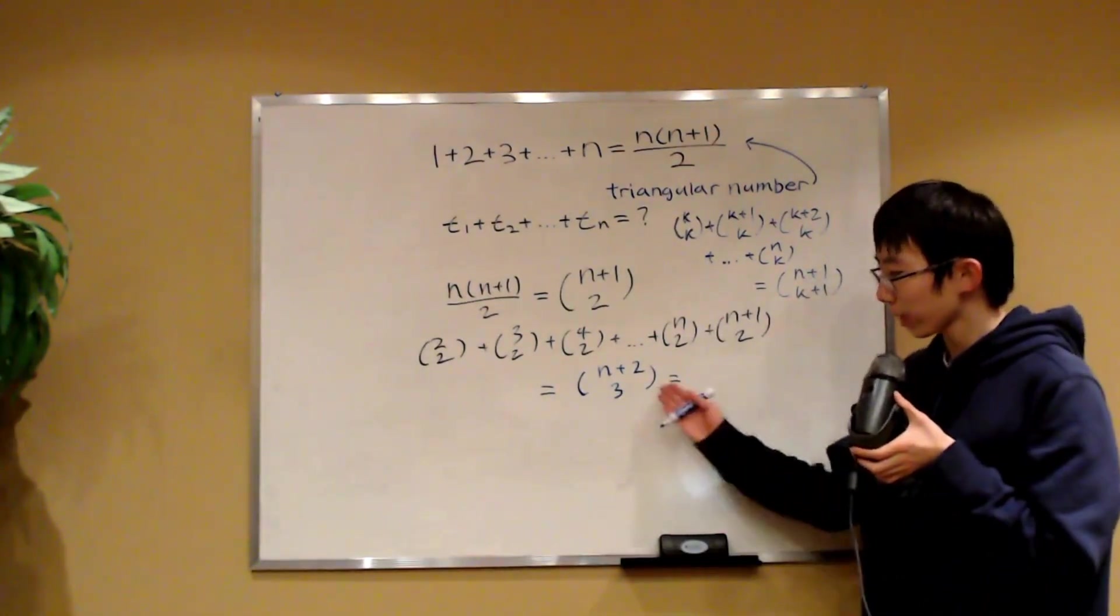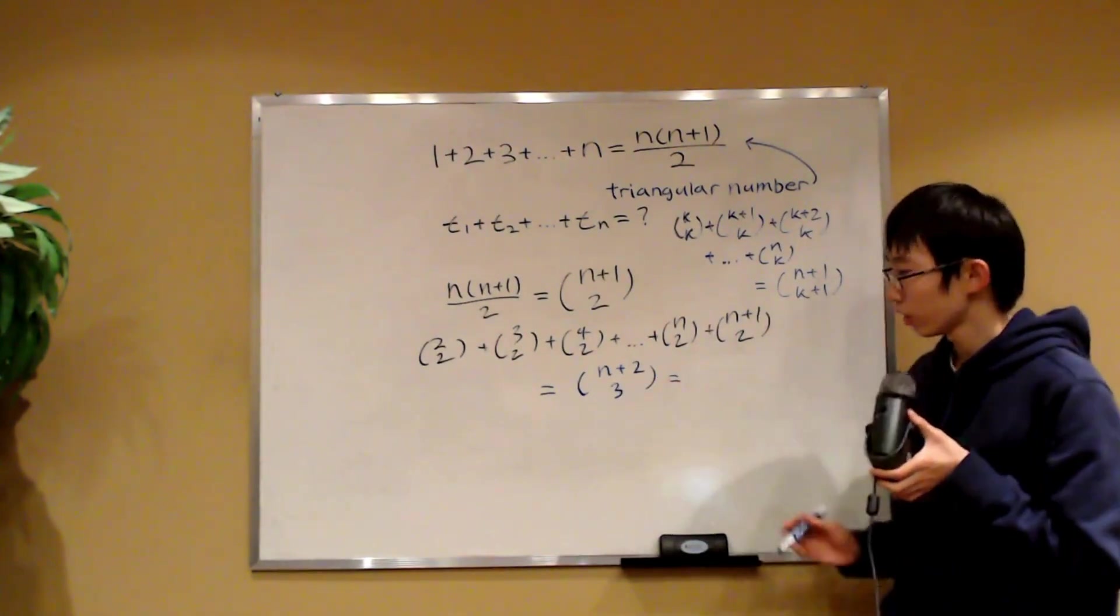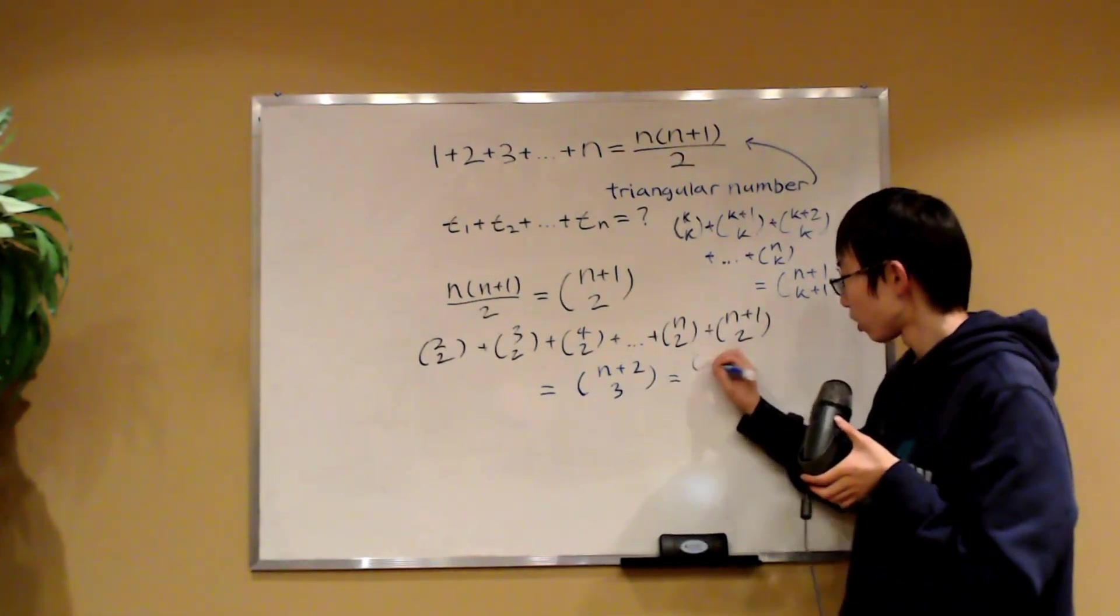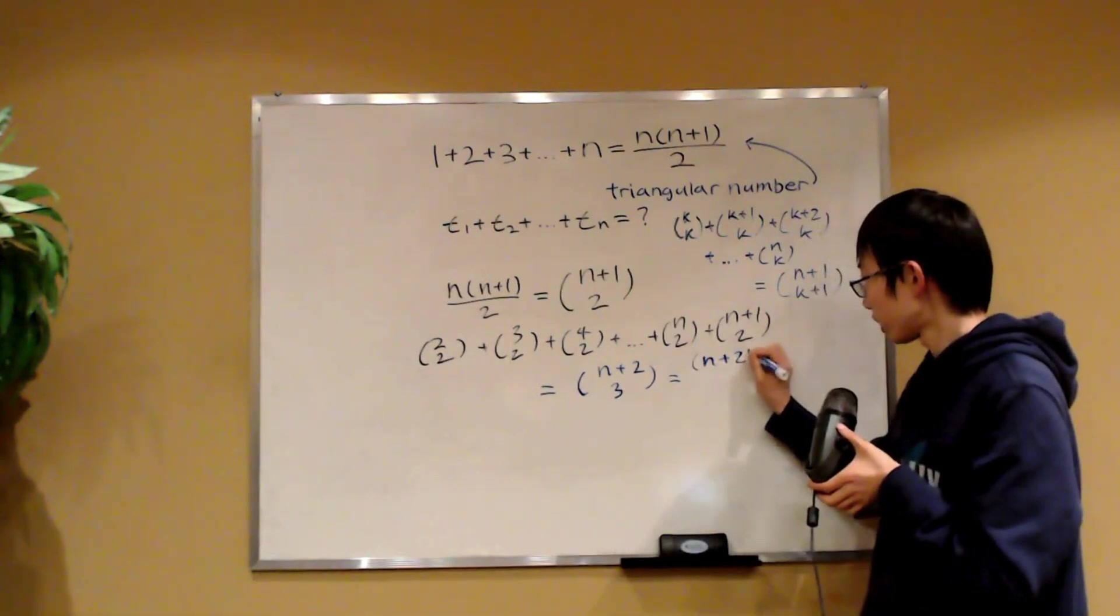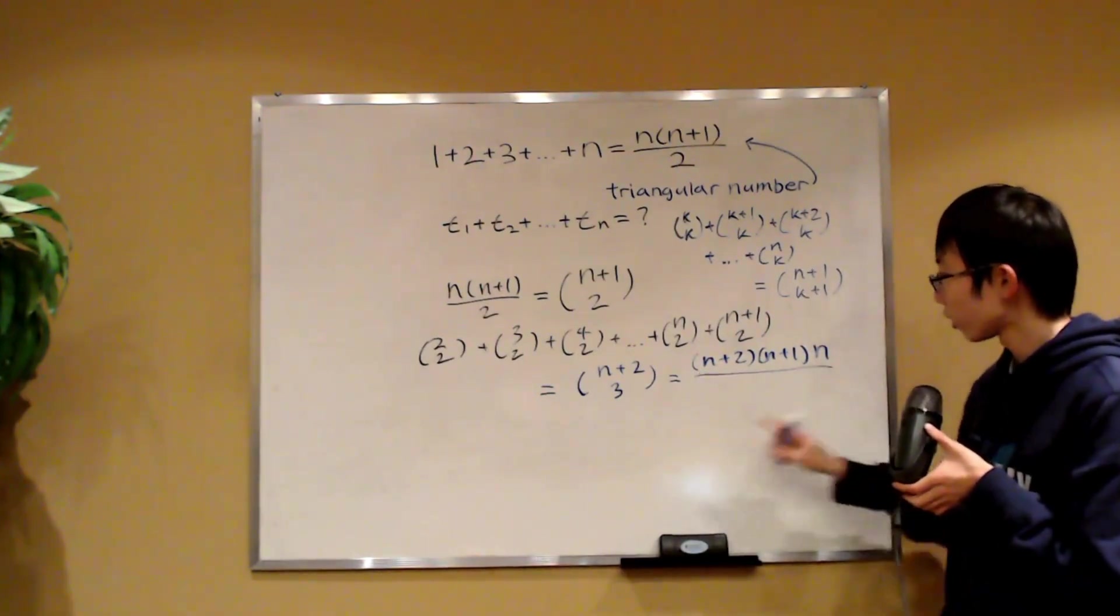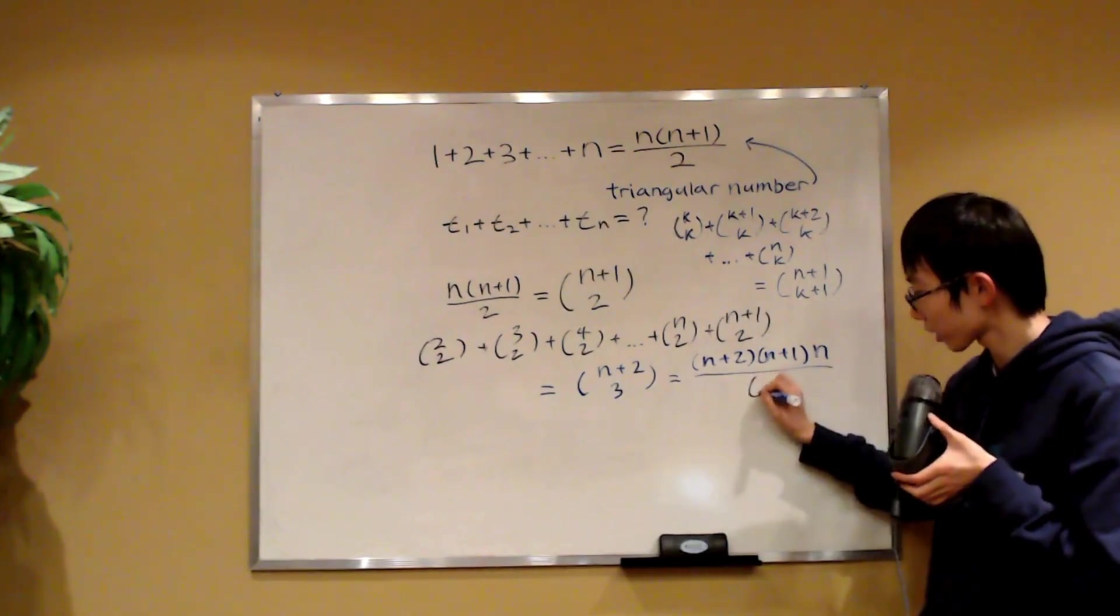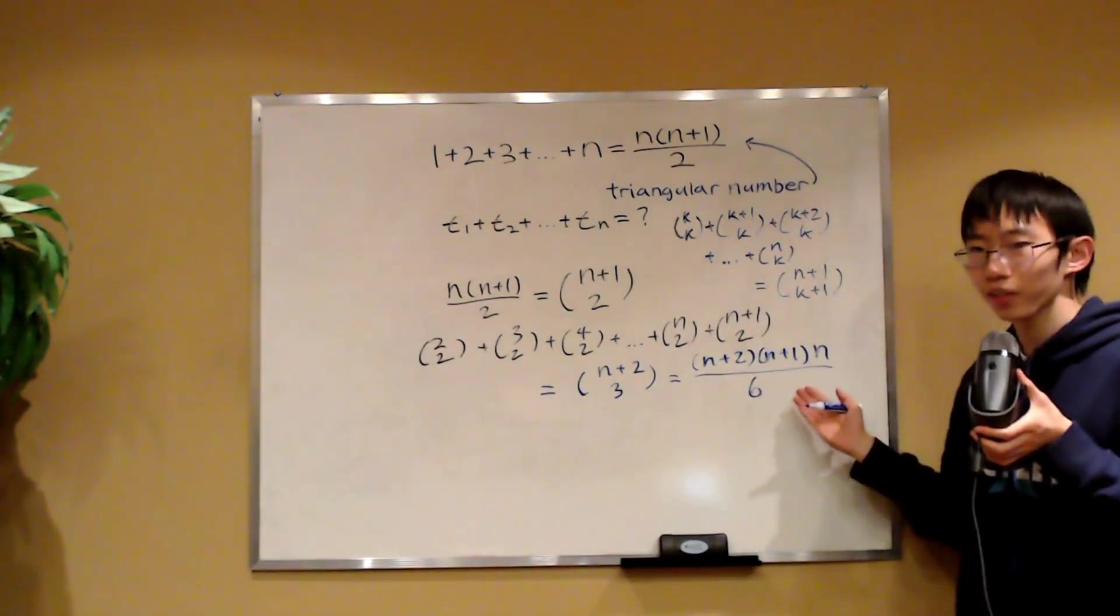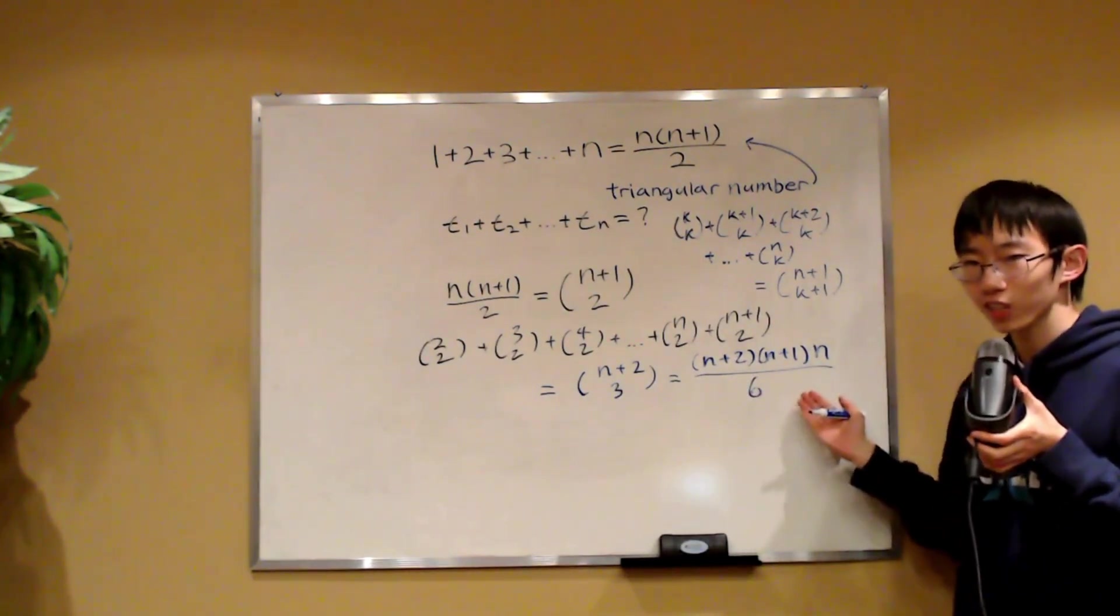Now, of course, we can expand this binomial coefficient. Expanding this gives us n plus 2 times n plus 1 times n, and then divided by 3 factorial, which is 6. So that is the formula for the sum of the first n triangular numbers.